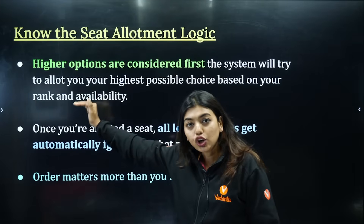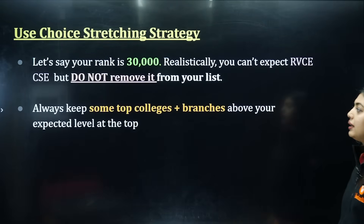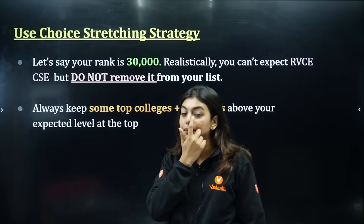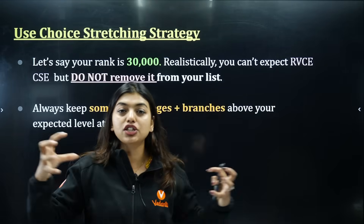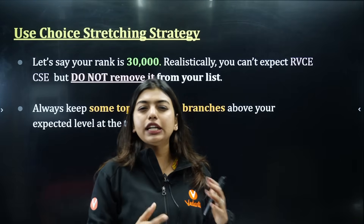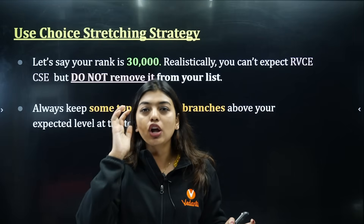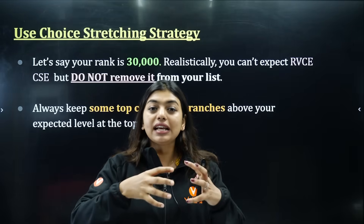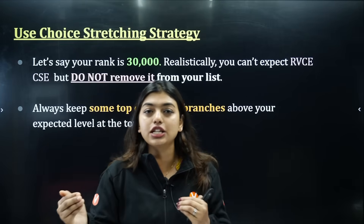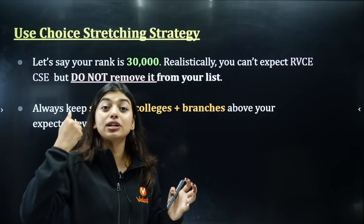Always choose good options first, then settle for the lower ones. Now the second tip: use a choice stretching strategy. Many students thought 20 choices were enough, but many successful students stretched their choices to 40 or even 60 options. They used to lock up to 60 choices so that all 60 were their own preferred selections.